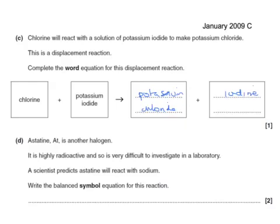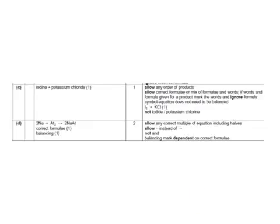Astatine is another halogen, highly radioactive and difficult to investigate. A scientist predicts it will react with sodium. We need a balanced symbol equation: sodium is Na, and astatine is At₂ because it's a halogen and forms a diatomic molecule. This gives sodium astatide, which has the same type of formula as sodium chloride, so it's NaAt. Balancing: 2Na + At₂ → 2NaAt. One mark for correct formulas and one for balancing.